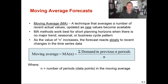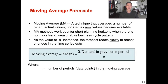Now let's dive into moving average forecasts. A moving average, or MA, is a technique that averages a number of recent actual values, updated as new values become available. It works great for short planning horizons where there's no major trend, seasonal, or business cycle pattern. Moving averages work great when it's a short planning horizon and there's no major trend, seasonal, or business cycle pattern.